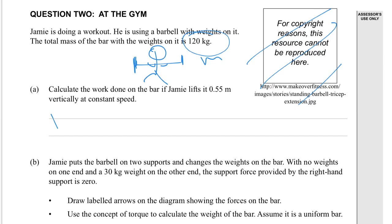Standard calculation: work equals force times distance. Force equals mg, so mg times distance. There's our mass, g is gravity, distance is 0.55 metres.